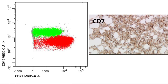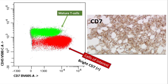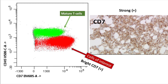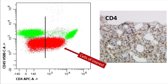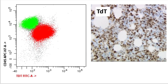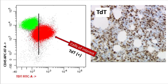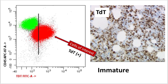For CD7, both the immunohistochemical slide and flow cytometry show the cells of interest are predominantly bright positive — in fact, brighter than the mature T cells. For CD4, the population of interest appears at least partial dim positive. TDT, a marker of immaturity, is positive on flow cytometry, confirming we are dealing with an immature population.